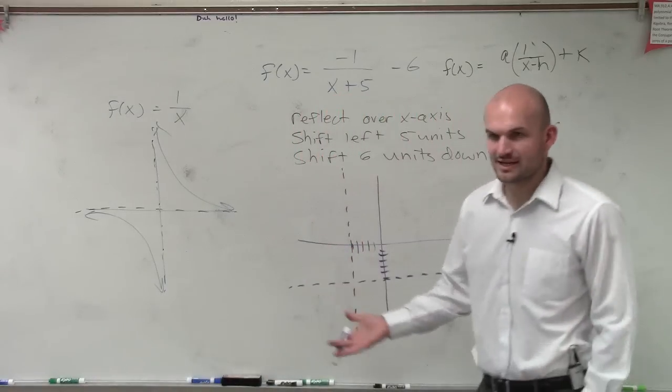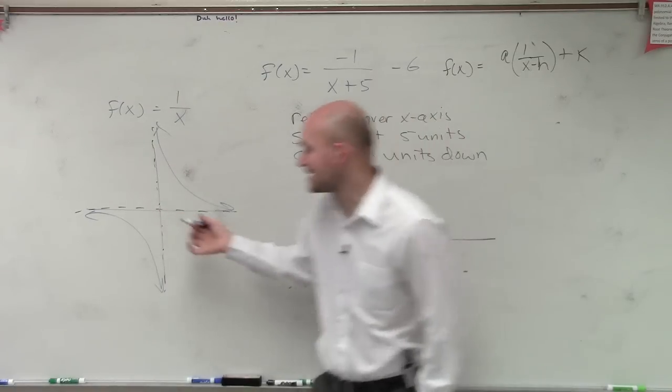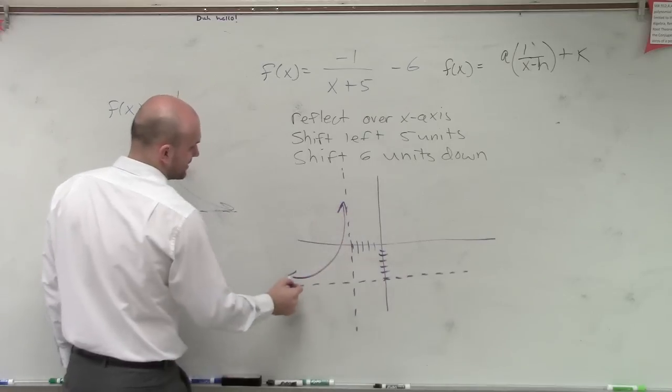And we need to know, what is the reflection going to look like? If I took this graph and reflected it over the x-axis, I would now have a graph that's going to look something like this.